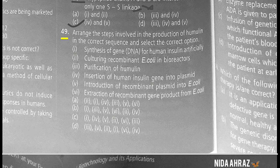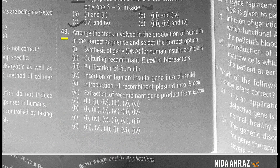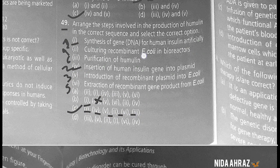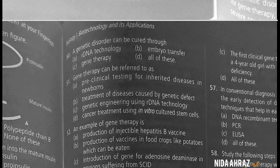Arrange the steps in production of humulin in correct sequence: first, synthesis of gene DNA for human insulin artificially; then insertion of human insulin gene into plasmid; introduction of recombinant plasmid into E. coli; culturing recombinant E. coli in bioreactors; extraction of gene product from E. coli; then purification of humulin. Option C is the correct choice.